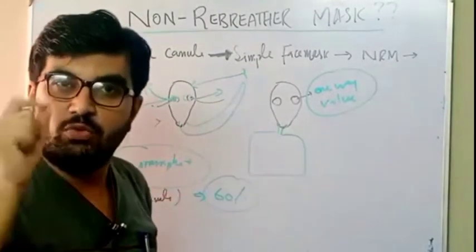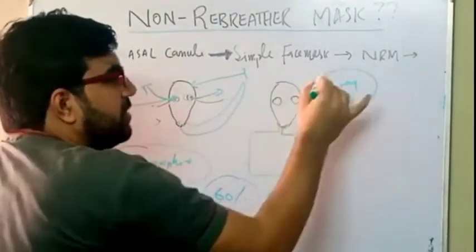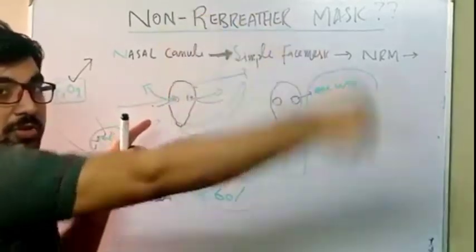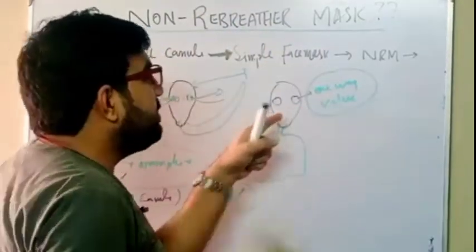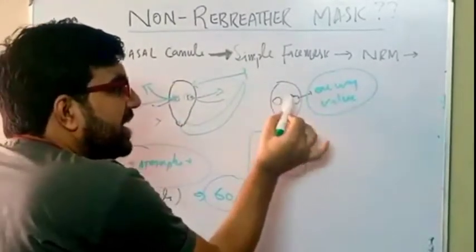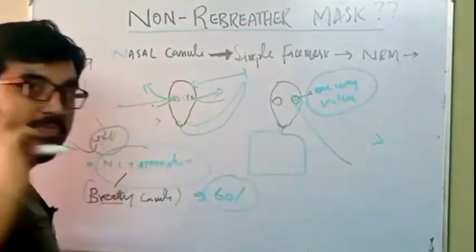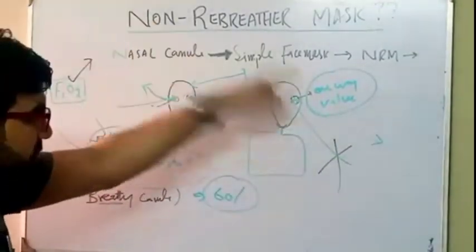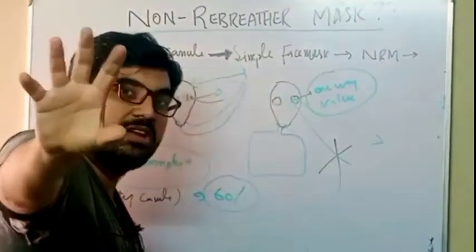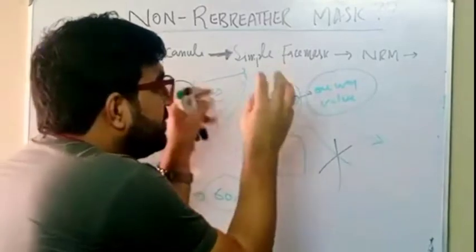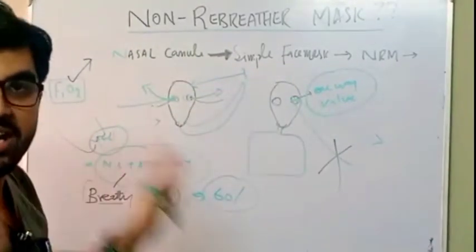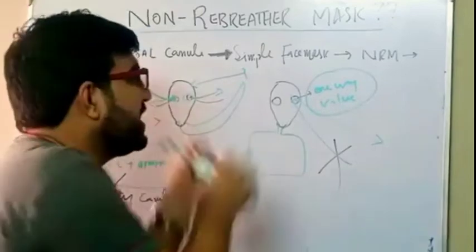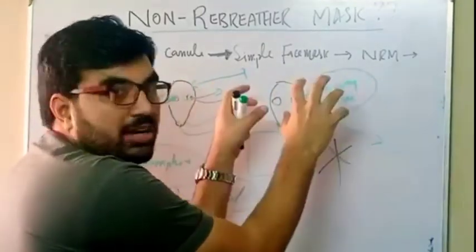The main concern today is the non-rebreather mask used in our ward. We must check its validity — there should be a one-way valve on the sides. A rebreather mask means there is interference from the external environment; a non-rebreather mask means there is a one-way valve where air can come out but no air can enter from the environment. In the ward, there are two clips applied on the sides of the holes. If there are no clips, this is not a valid non-rebreather mask and you cannot expect the oxygen level to rise.